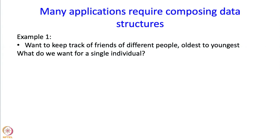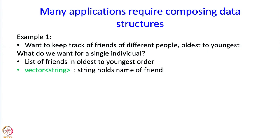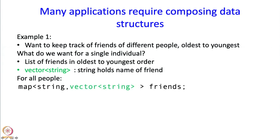Let me begin by asking what I want for a single individual. For a single individual I want a list of friends in oldest to youngest order. So naturally what I can use is a vector of strings — the string will hold the name of the friend, and I have a vector so I can put lots of names in it in oldest to youngest order. So this is for one individual. If I want it for all, I should build a map.